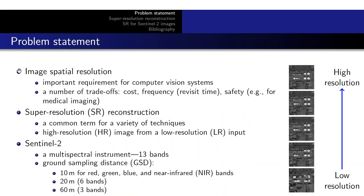Image spatial resolution is an important requirement for computer vision systems. It is subject to a number of trade-offs that include cost, frequency, and even safety in some cases. Super-resolution reconstruction is a common term for a variety of techniques whose common goal is to process a low-resolution input to generate a high-resolution image.